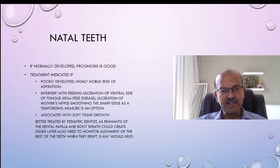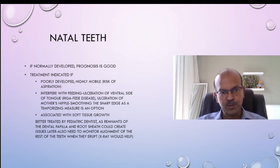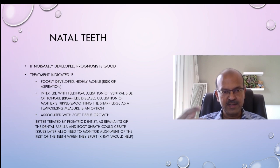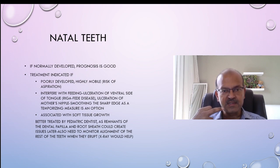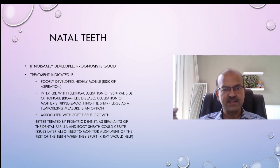If the tooth is normally developed the prognosis is good and you can maintain it like a regular tooth — you may start cleaning the teeth. Treatment is indicated if it's a poorly developed tooth with a high risk of detachment and aspiration. Sometimes these have sharp edges as the enamel or the crown is poorly formed, and it may interfere with feeding. There can be ulceration of the ventral side of the tongue, which is called Riga-Fede disease, and the mother's nipple can get ulcerated from the sharp edge of the tooth as well.